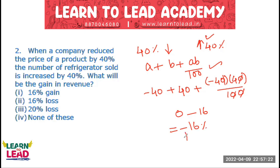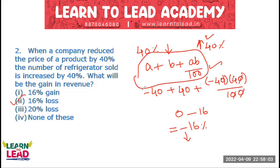The minus update gives a loss — a reduction on the minus side — of 16 percentage, so there will be a loss. In this format, I use compound interest, successive discount-based problems, geometry, and mensuration formulas.